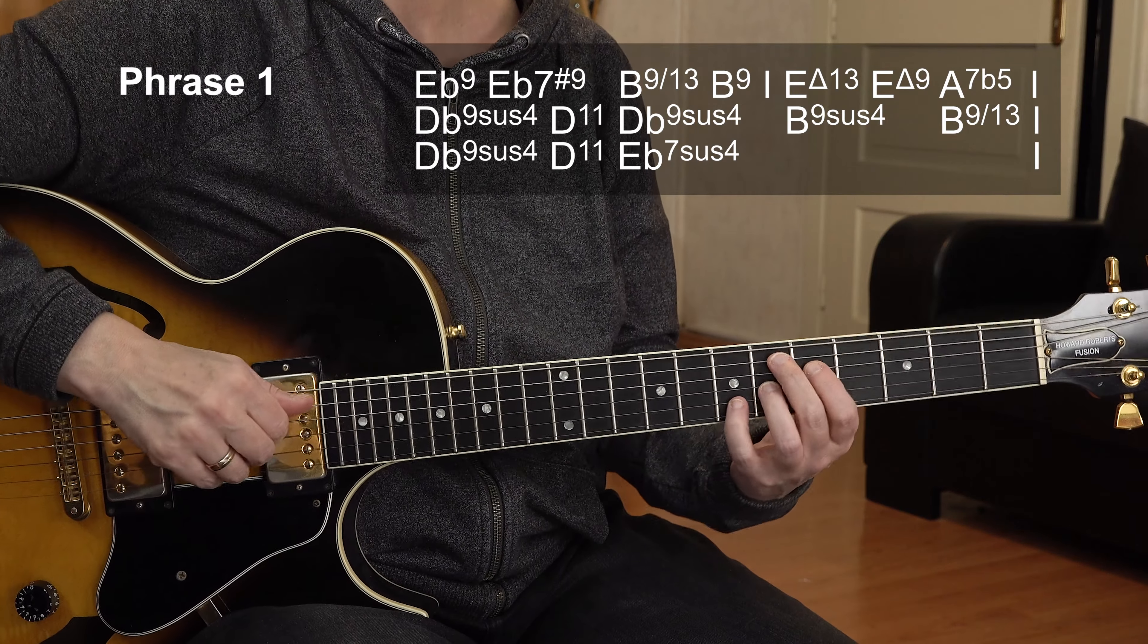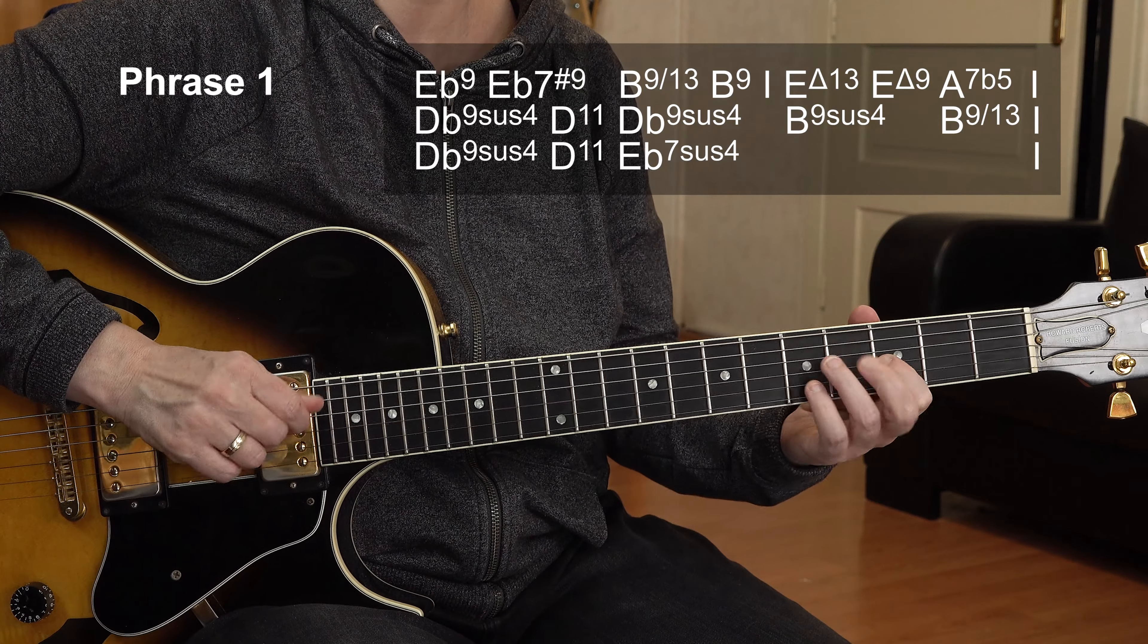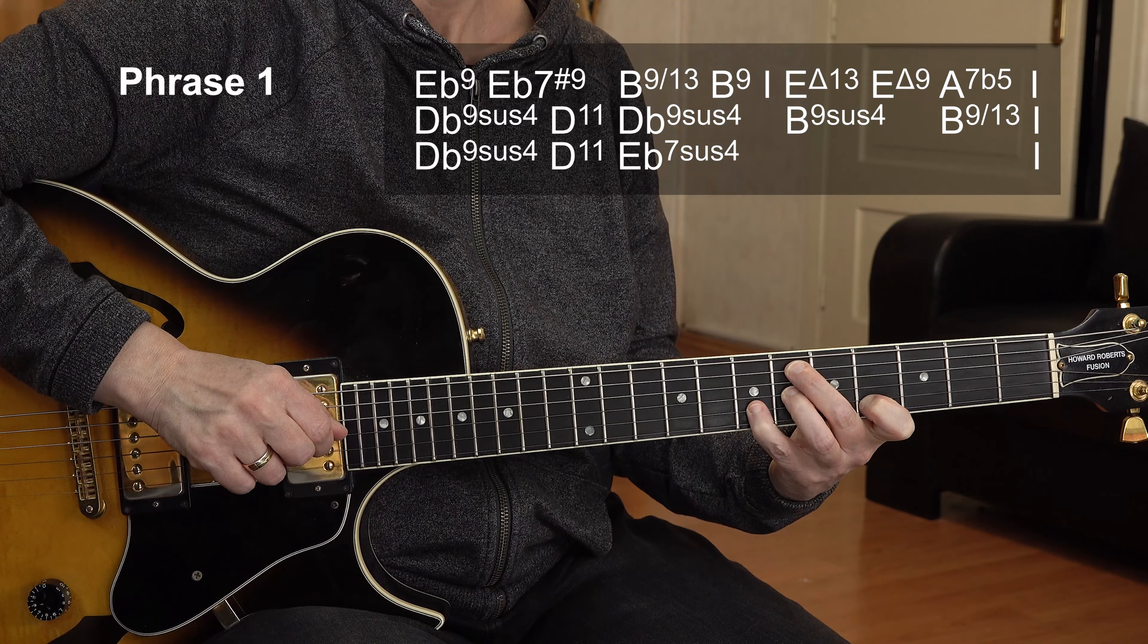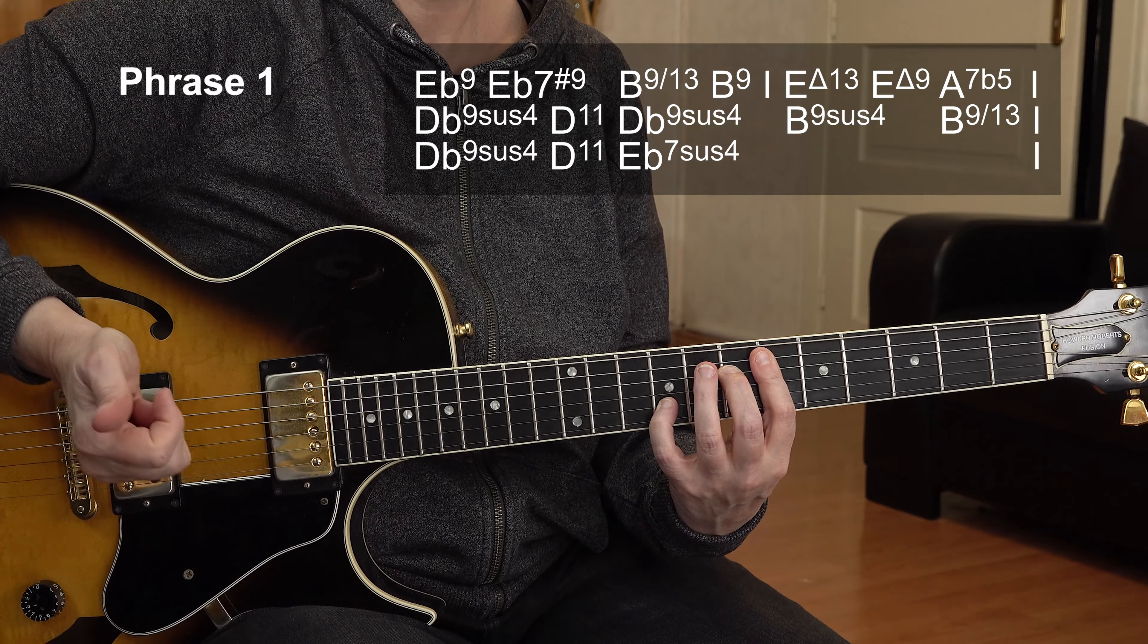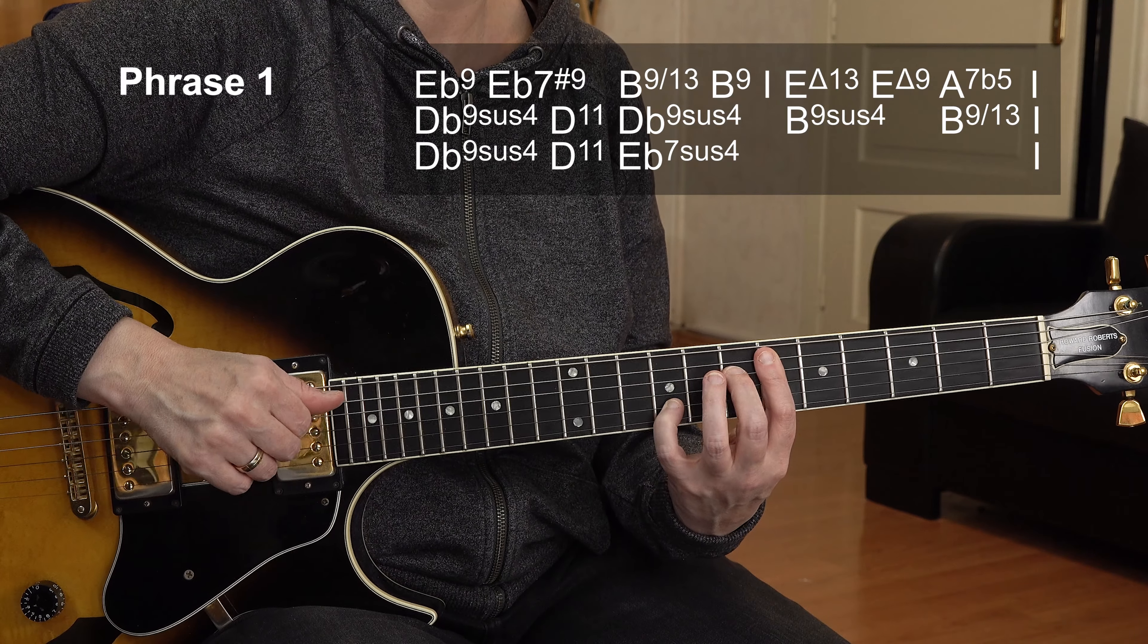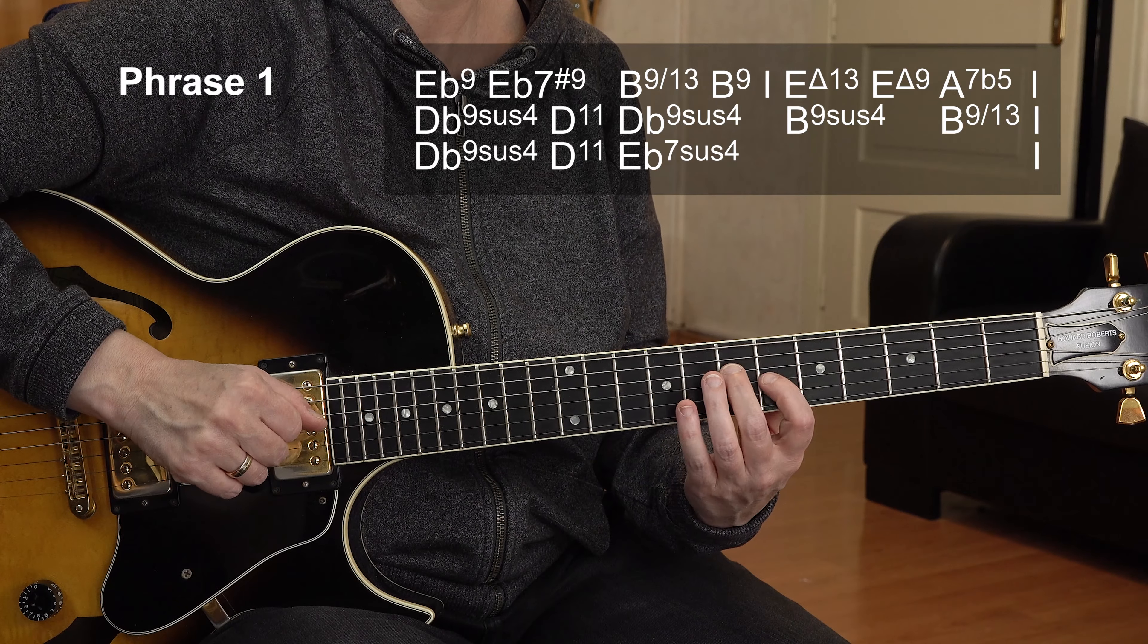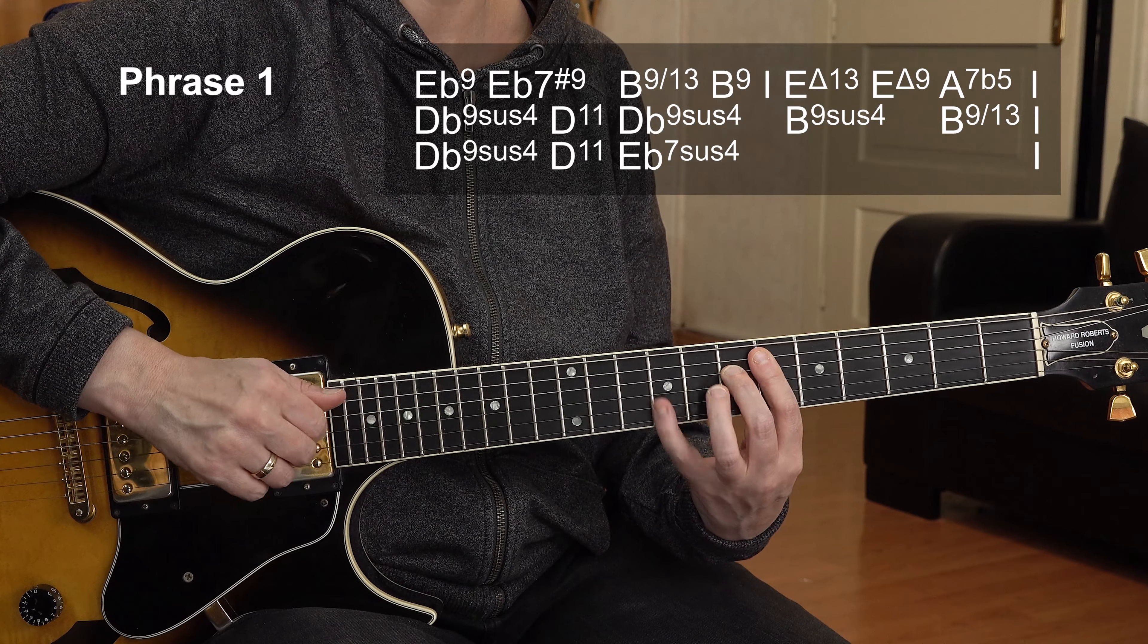Then immediately we go to an E flat seven sharp nine chord. Nice alteration. And then we have a B9 13 chord. You may not know this. This is the standard B13 chord, and this is another alternative voicing where we start on the third of the chord.